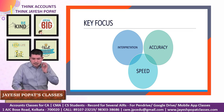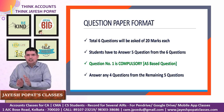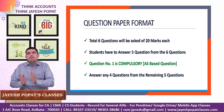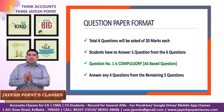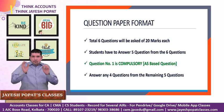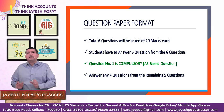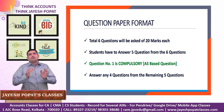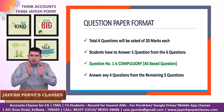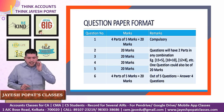Now let's talk about the question paper format. The accounting and advanced accounting paper comprises six questions of 20 marks each, making it a 120-mark paper. Out of these, you need to attempt five questions of 20 marks each, totalling 100 marks. Question number one is compulsory, and out of the remaining five questions you need to answer four.